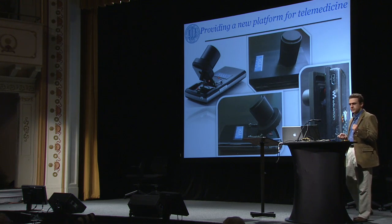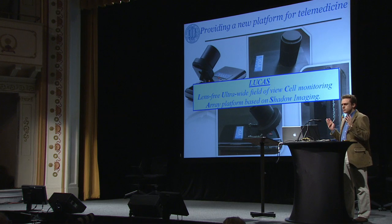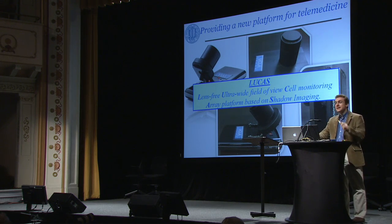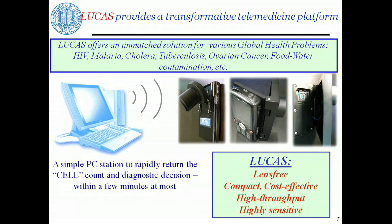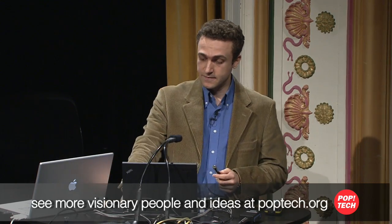What you're seeing here are some prototypes from my group. The underlying technology is called LUCAS — it stands for Lens-Free Ultra Wide Field of View Cell Monitoring Array Platform Based on Shadow Imaging. The shadow imaging part is the really important part, because instead of imaging the cell with a lens, we image its shadow. As you would know, the most expensive part of a camera or microscope is the lens. We get rid of that totally, which saves us money and weight, making it extremely compact, cost-effective, and at the same time very sensitive.